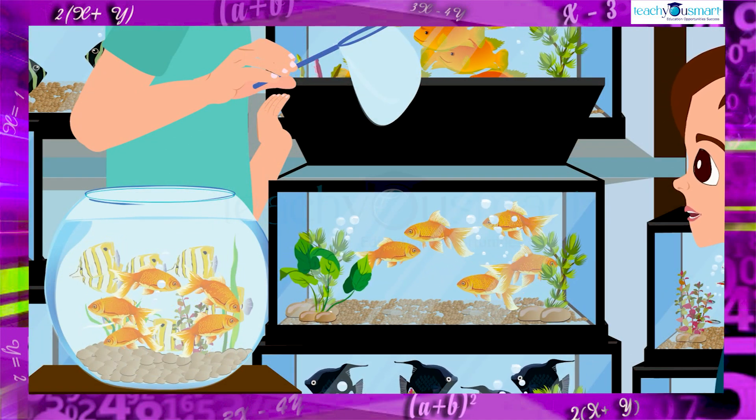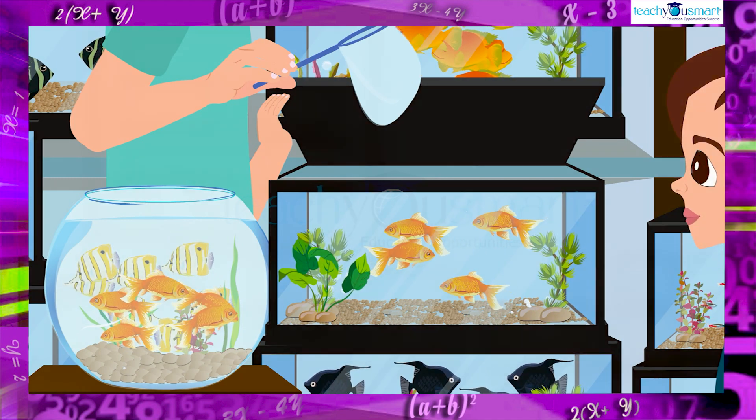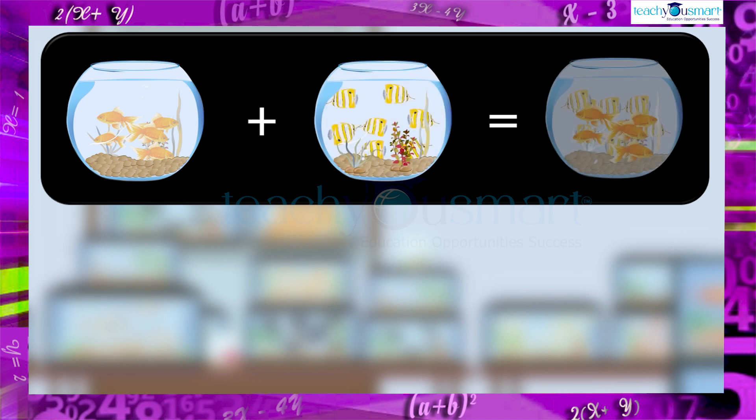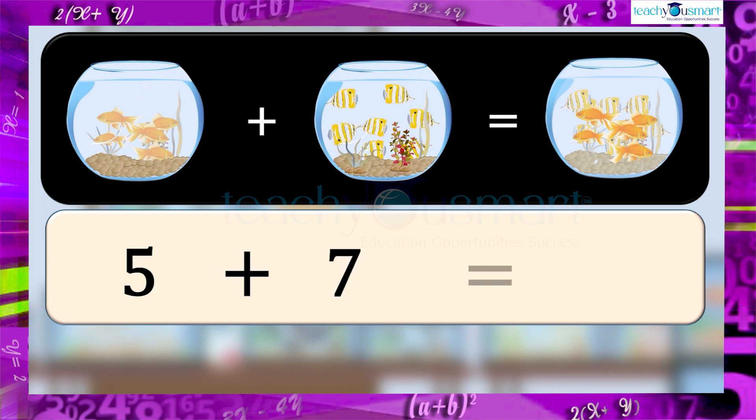Am I right? Yes, of course. That is, five goldfishes plus seven butterflyfishes is equal to twelve fishes. Or, five plus seven equals twelve.